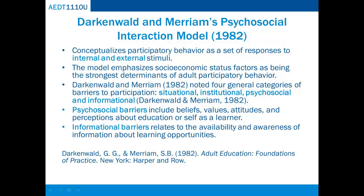Darkenwald and Merriam renamed and further defined Cross's dispositional barriers as psychosocial barriers. Psychosocial barriers include beliefs, values, attitudes, and perceptions about education or self as a learner. The fourth category, informational, relates to the availability and awareness of information about learning opportunities. This category can reflect a learner's lack of awareness as well as the institution's lack of effectively communicating information about student programs.